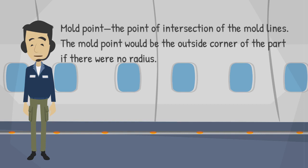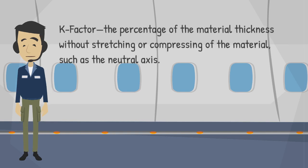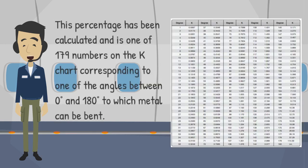K factor: the percentage of the material thickness without stretching or compressing of the material, such as the neutral axis. This percentage has been calculated and is one of 179 numbers on the K chart, corresponding to one of the angles between 0 degrees and 180 degrees to which metal can be bent.